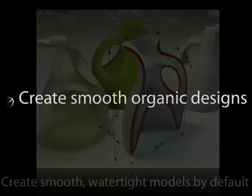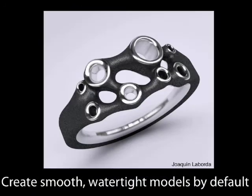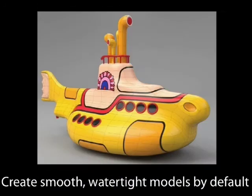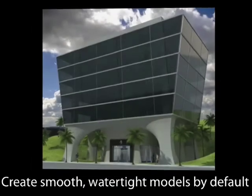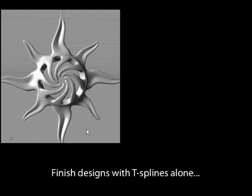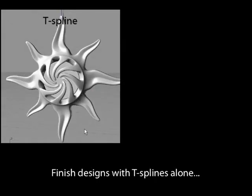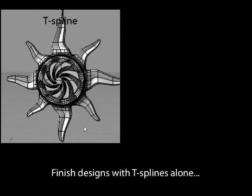Creating a T-Splines model, even with complex curvature, can be done in a matter of minutes. All T-Splines models are watertight by default, with smooth transitions, even where the surface is not rectangular. You can create your model as a single T-Spline surface, such as this jewelry piece.